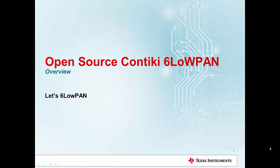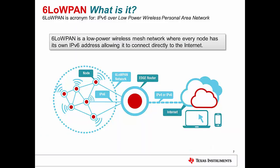Let's explore 6LoWPAN. So what is it? The first and foremost question that comes to mind is: what is 6LoWPAN? 6LoWPAN essentially stands for low-power personal area networks supporting IPv6 addressing — essentially IPv6 over low-power wireless personal area networks.